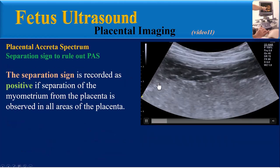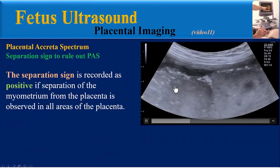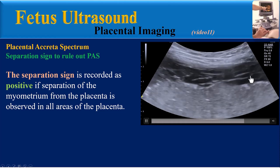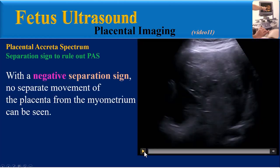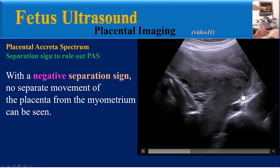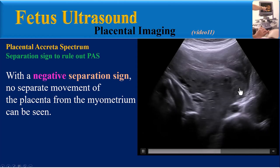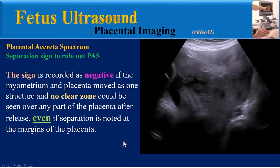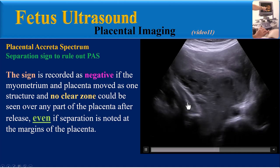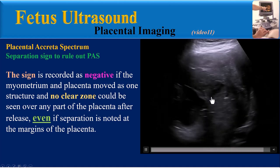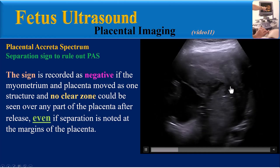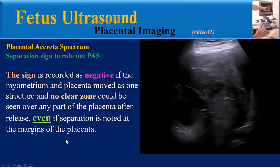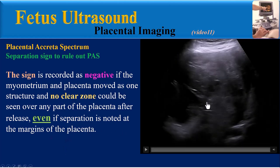The separation sign is recorded as positive if separation of the myometrium from the placenta is observed in all areas of the placenta. In contrast, with a negative separation sign, no separate movement of the placenta from the myometrium can be seen, as shown in this clip. The sign is recorded as negative if the myometrium and placenta move as one structure and no clear zone can be seen over any part of the placenta after release, even if separation is noted at the margins of the placenta.